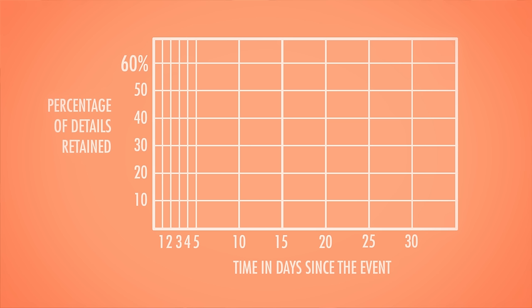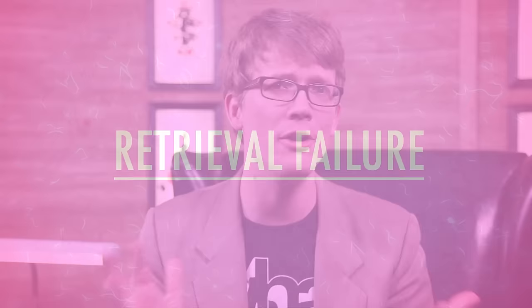Even memories that have been encoded are still vulnerable to storage decay, or natural forgetting over time. Interestingly, even though we can forget things pretty quickly, the amount of data we forget can actually level off after a while. Bernice would have forgotten about half of what she first noticed from the crime scene a couple of days later, but what she still remembered she'd likely hang on to, because the rate at which we forget tends to plateau. A lot of times forgetting means we can't call a memory up on demand because of retrieval failure.